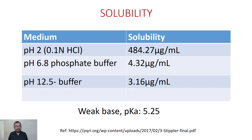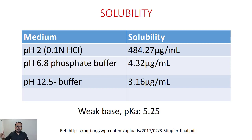In this example, the drug is loratidine, a weak base with pKa of 5.25. Loratidine has good solubility on the acidic side at pH 2 or 0.1N HCl, but when you move towards the alkaline side, solubility drastically drops — only 4.32 micrograms per mL at pH 6.8, and 3.16 micrograms per mL at pH 12.5 buffer. This is a BCS Class 2 drug with poor solubility.